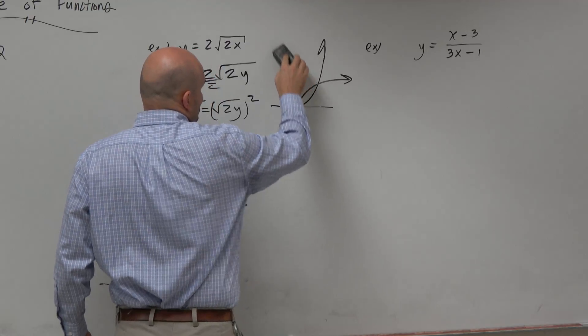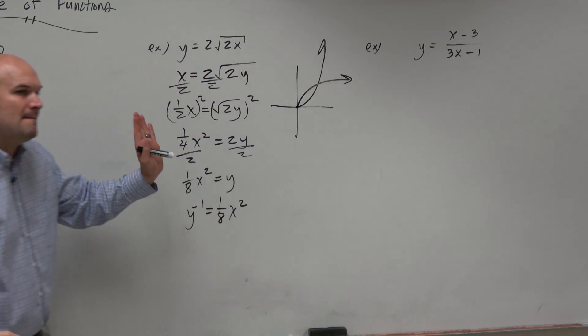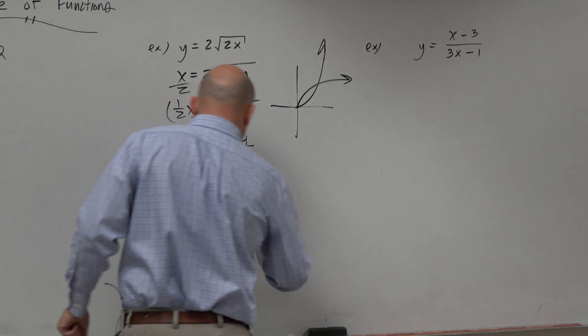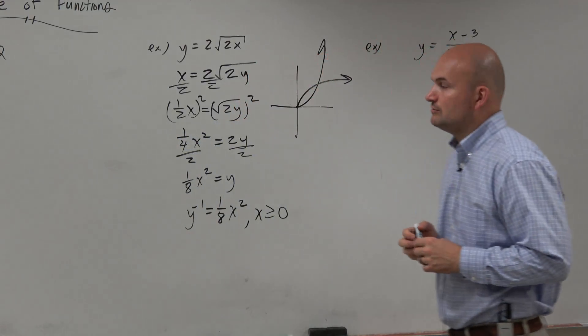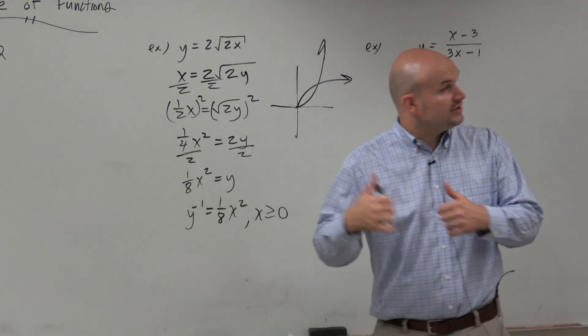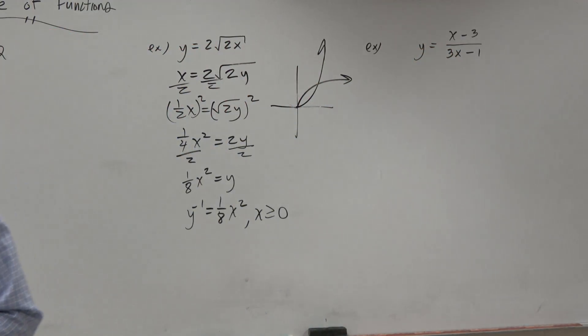So we need to restrict this to only work with the positive values. So therefore, we're going to add the restriction. x has to be greater than or equal to 0. When x is greater than or equal to 0, you can see we now have an inverse.